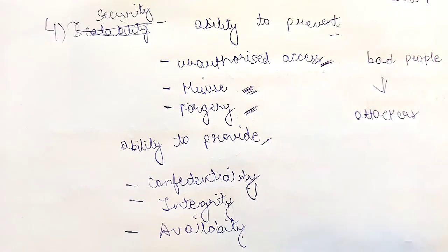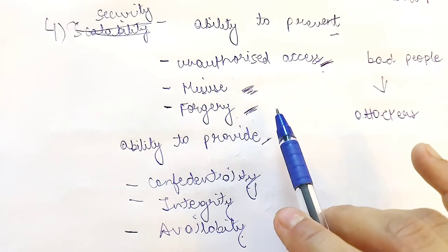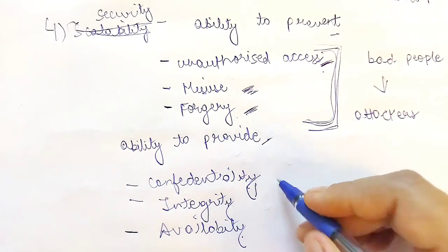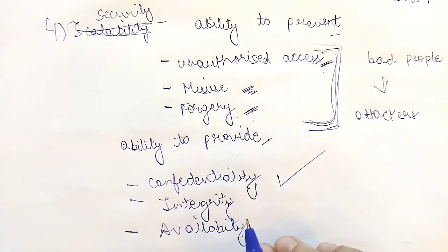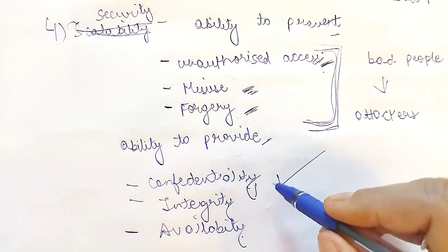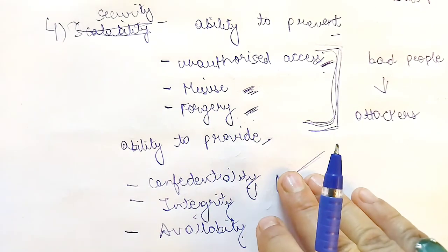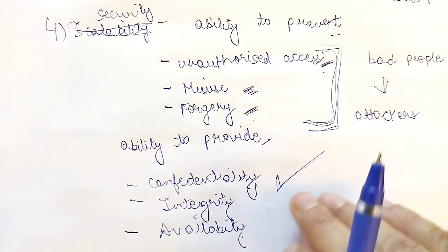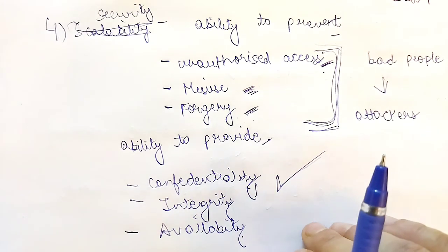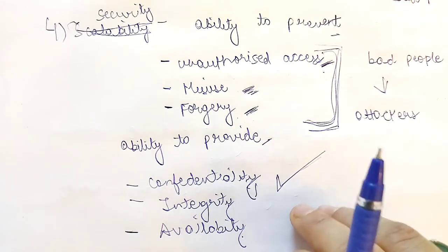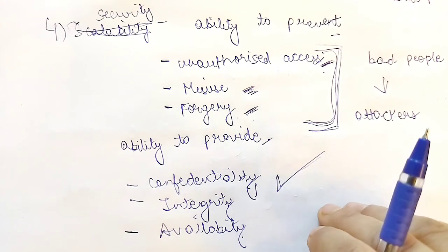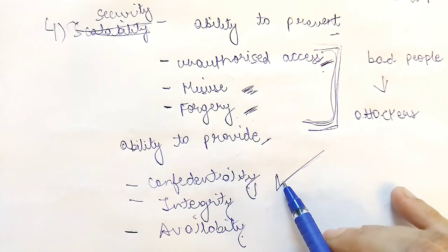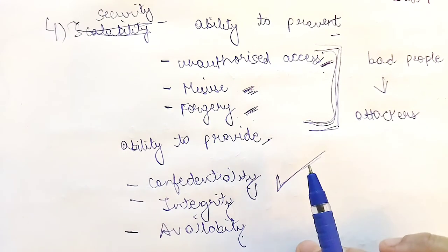It becomes an important task for the computer network to prevent all these activities by providing confidentiality. Confidentiality means being able to hide your information. To provide confidentiality, data is not sent in its original form. Before sending, the data is coded in a format understandable only by the sender and the receiver. At the receiver's end, it is converted back into the original form. This is how the network provides confidentiality.